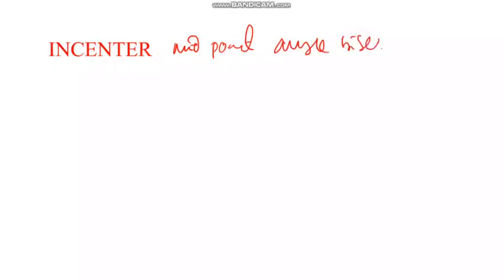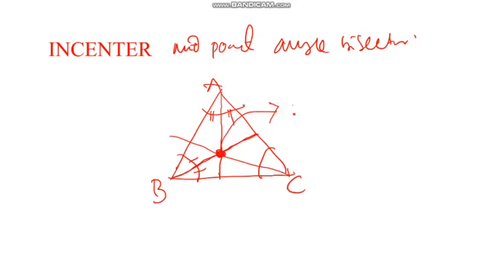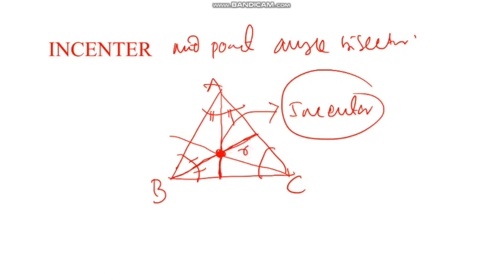The in-center is the midpoint of the angle bisectors. Consider triangle ABC with angles A, B, C. The angle bisector divides each angle into two equal parts. Draw the bisector of angle A, angle B, and angle C — where they meet is the in-center. If I draw a circle inside the triangle touching all three sides with the in-center as the center, that is the inscribed circle with inradius. The circum center is the midpoint of the perpendicular bisectors of the sides.